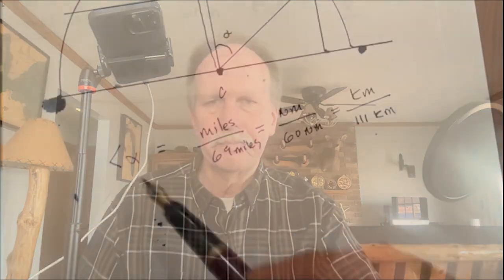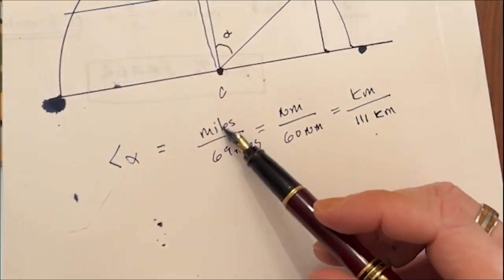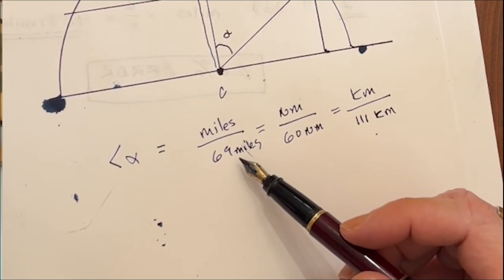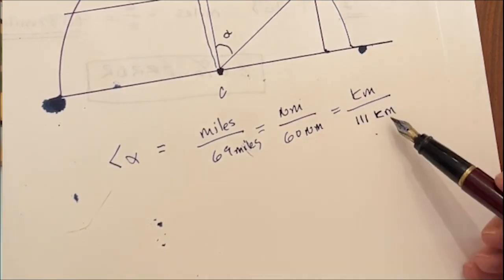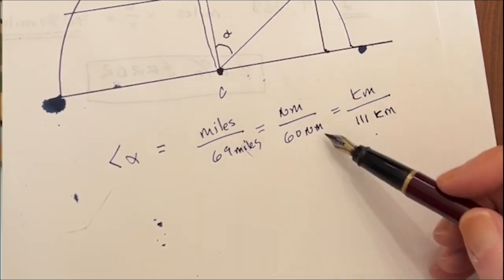Well it depends on the unit of measurement that you're using. If it's statute miles, one degree equals 69 statute miles on earth. If it's nautical miles, it's one every 60 nautical miles. And if it's kilometers, it's one every 111 kilometers. So our first step will be to figure out how far our distance is in degrees. Angle alpha equals the miles divided by 69 miles, nautical miles divided by 60 or kilometers divided by 111 kilometers. Keep your units the same.